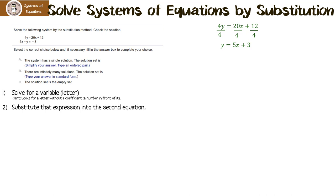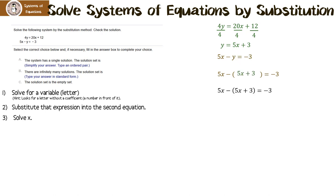The next thing is to substitute that expression into the second equation. I'm going to leave a big space where y is, because y equals 5x plus 3, and put that right in. Now we solve for x using the distributive property. 5x comes down, then negative 1 times 5x is negative 5x, and negative 1 times 3 is negative 3. Collecting like terms: 5x minus 5x is 0x. Adding 3 to both sides gives 0x equals 0.